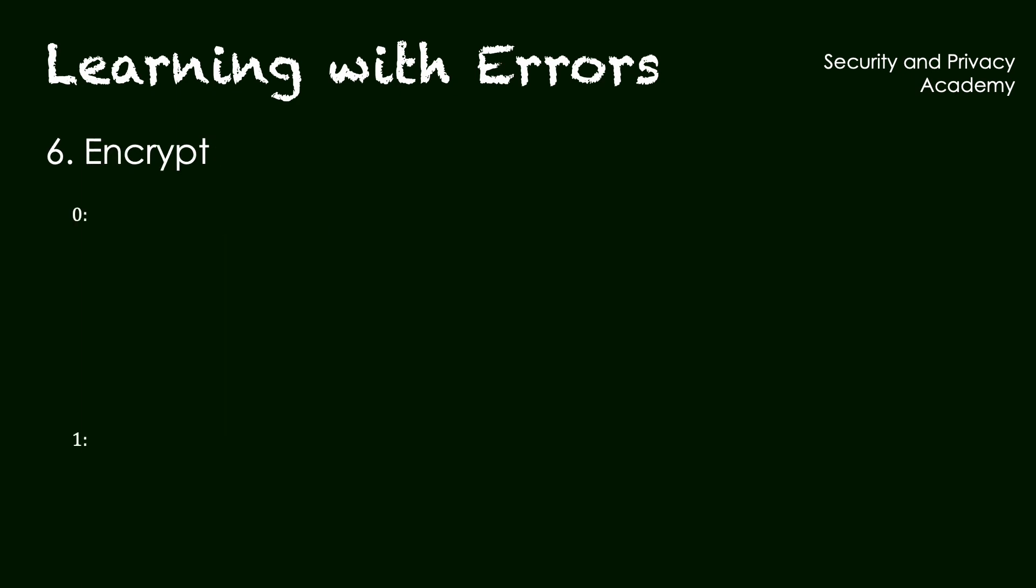Now we can encrypt. Encryption happens bitwise. It is different for zeros and for ones, so depending on how stuff is encrypted, we can now later, during the decryption, detect whether it was a zero or a one. And I will show you how to encrypt both at the same time.